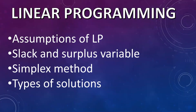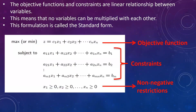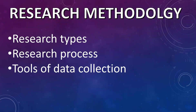In linear programming: assumptions — linearity, divisibility, certainty — and slack variables versus surplus variables. Last time both were asked — in which case we use slack variables and in which case surplus variables, for minimization and maximization. In the simplex method, who developed it — that question may be asked. Then types of solutions: basic solution, optimum solution, basic feasible solution — all definitions are covered in the linear programming part. Then objective function, constraints, and non-negative restrictions — look at the definitions of all these.